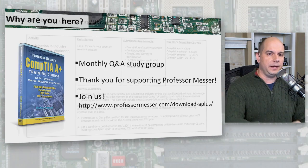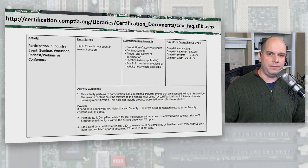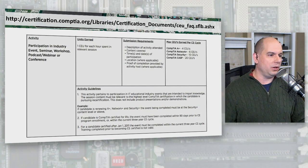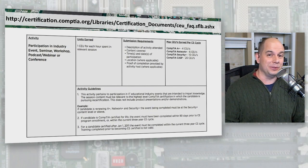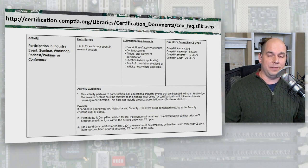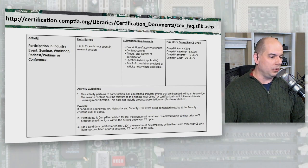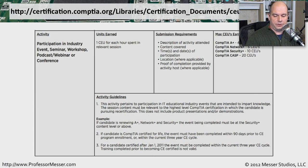If you already have an A-plus certification and you're participating in continuing education, you can use these live events towards continuing education credits. It's probably easiest to Google 'CompTIA Certification Continuing Education' to find the FAQ. You can't use it to cover all of the credits you need, but it does go towards some of them — and something is better than nothing.